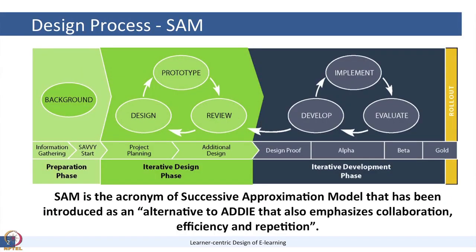In SAM, if you have small prototypes, we work in three cycles: a preparation phase, an iterative design phase, and an iterative development phase. These are short cycles. The idea is that you first create prototypes — don't create the entire thing and send it to the client. Instead, create small prototypes, because you have to first freeze the design. Speak to your client and SMEs so they freeze the content first. Small edits are okay, but big changes are a problem.